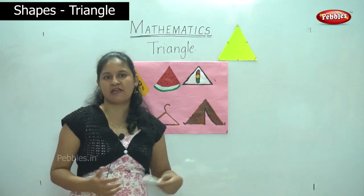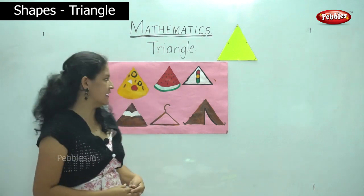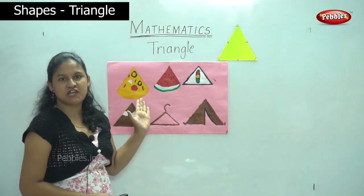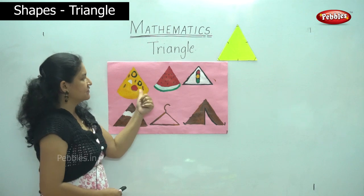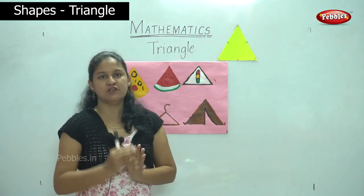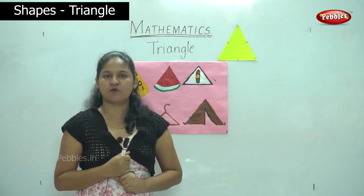We will see some examples of the triangle. It is the slice of a pizza which comes in the shape of a triangle. The next is your watermelon, the fruit watermelon. You can slice it in the shape of a triangle.